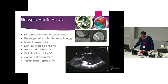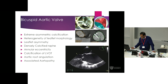The problem with bicuspid aortic valves is there's asymmetrical calcification that can occur. You get heterogeneity of leaflet morphology and asymmetry, and occasionally very calcified raphae. It's a very eccentric annulus and calcification in the outflow tract. It's often associated with aortopathy and angulation, and this makes it very challenging.